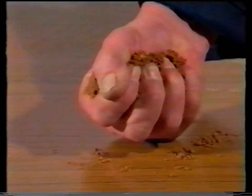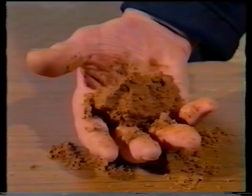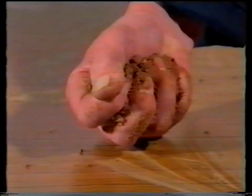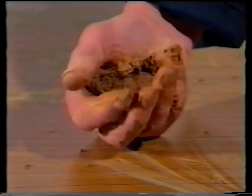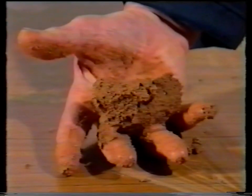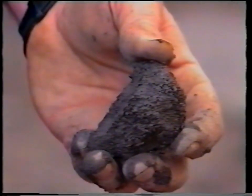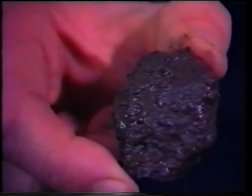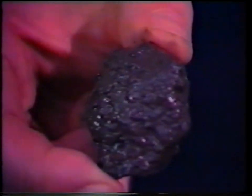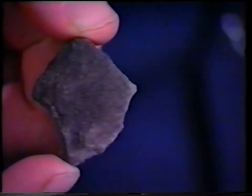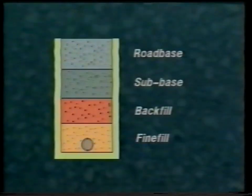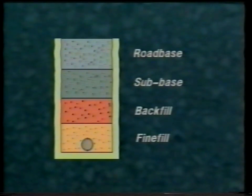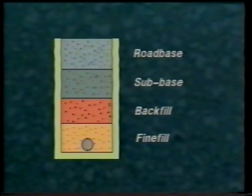Fine fill should be able to be squeezed into a ball and more or less hold together. Too dry and it collapses; too wet and it may hold but moisture will ooze out. Granular materials should show a moist sheen on the larger particles with fine particles adhering. Too wet and there is visible water and no adhering fine particles. Too dry and there is no sheen and only a few adhering particles. The same principles apply for all unbound layers, whether the materials are to be used as fine fill, back fill, sub base or road base.